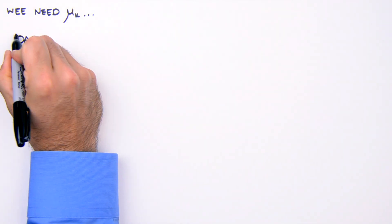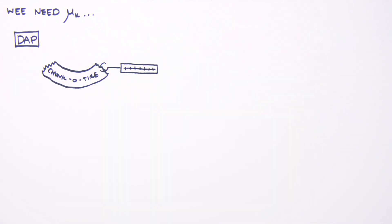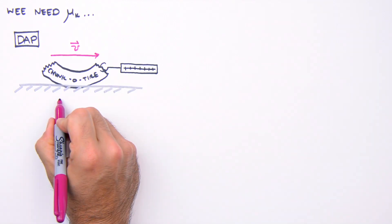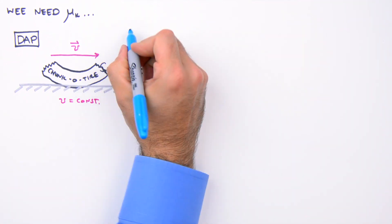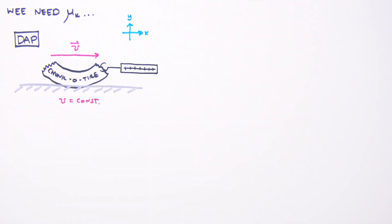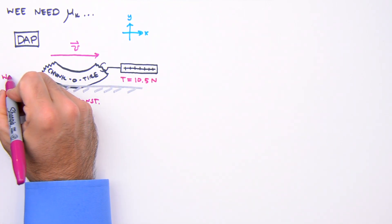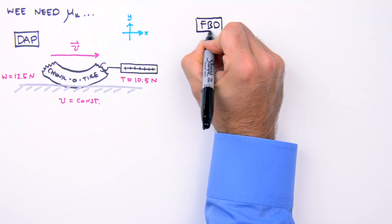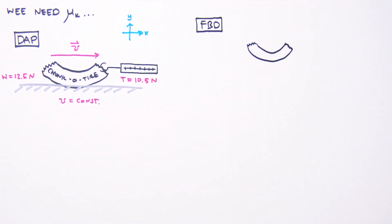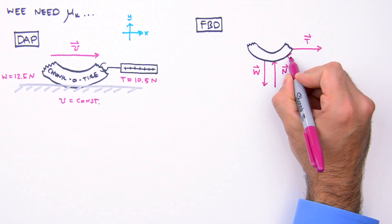Let's draw this. We've got a piece of tire being pulled horizontally along the road by a spring scale at constant speed — this information is critical: v equals constant. We choose a coordinate system with positive x to the right. The tension on the tire from the spring scale is 10.5 newtons, and the weight of the tire is 12.5 newtons. The forces acting on the tire are: weight downward, normal force upward, tension force to the right, and kinetic friction opposing the motion to the left.